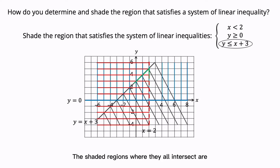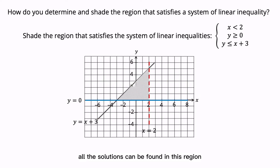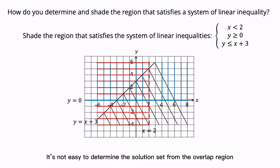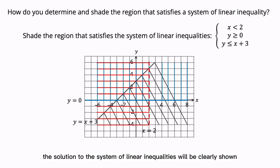The shaded regions where they intersect are where all the inequalities in the system are satisfied. All the solutions can be found in this region. However, it's not easy to determine the solution set from the overlap region. We can make it clearer if we shade the unsatisfied region instead — the solution to the system of linear inequalities will then be clearly shown.